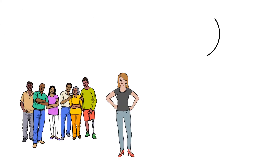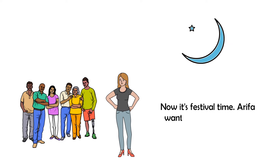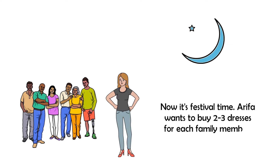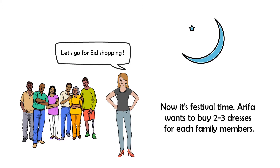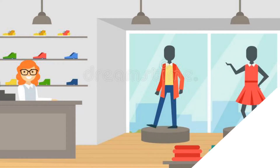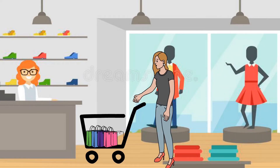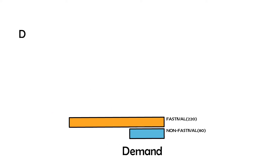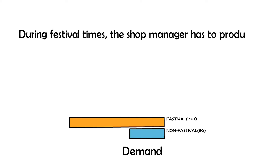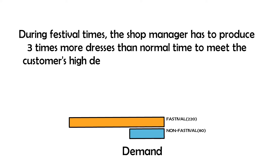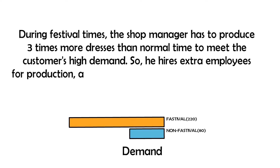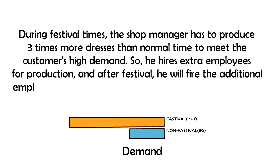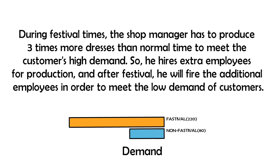Now it's festival time. Arifa wants to buy two or three dresses for her family members. During festival times, the shop manager has to produce three times more dresses than normal time to meet the customers' high demand. So he hires extra employees for production. And after the festival, he will fire the additional employees in order to meet the low demand of customers.